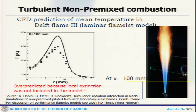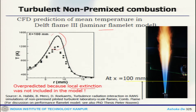Using this flamelet model, we can get the radial distribution of temperature. There are some over-predictions of the local extinction because the temperature profile is over-predicted — the flamelet model does not take into account local extinction. This literature gives an idea of the different issues of the flamelet model.